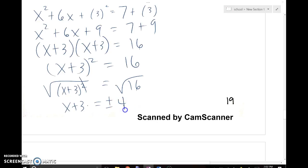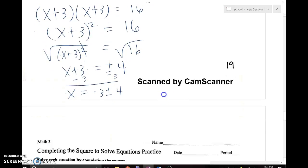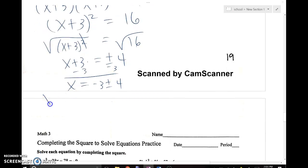x + 3 is equal to the square root of 16. Don't forget plus or minus because we are dealing with two solutions. Subtract 3 from both sides, and I got x equals negative 3 plus or minus 4, which then yields x equals negative 3 plus 4, or 1.